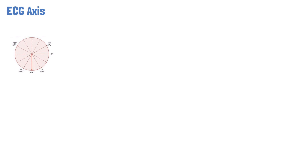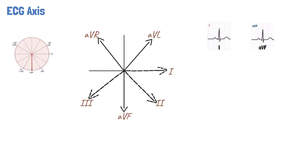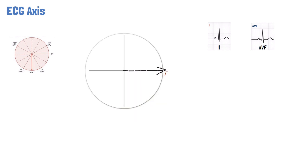The axis of the ECG is the average direction of the overall electrical activity of the heart. When talking about the ECG axis, it is generally the QRS axis that is being referred to. There are several ways of calculating the QRS axis, but the most common is the quadrant method. The quadrant method works by looking at lead 1 and aVF. Returning to the hexaxial system, lead 1 cuts the hexaxial system in horizontal halves at 0 degrees, and lead aVF cuts the hexaxial system into vertical halves at 90 degrees. Therefore, these two leads can be used to divide the hexaxial system into 4 quadrants, and the QRS axis can be placed in one of those quadrants.